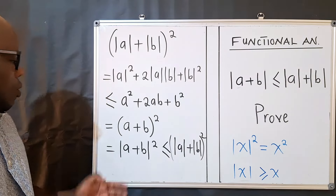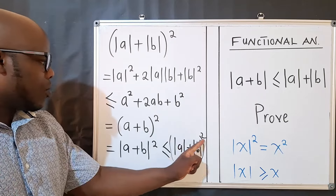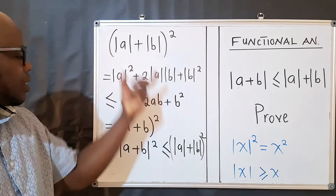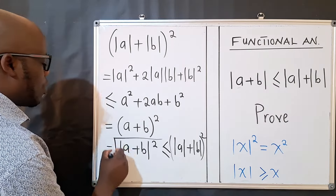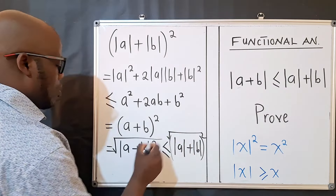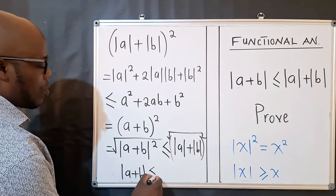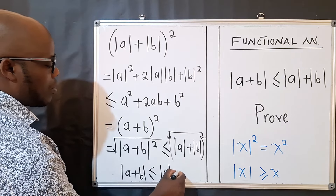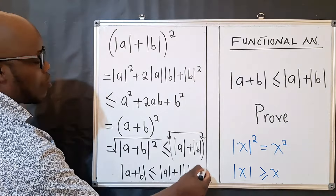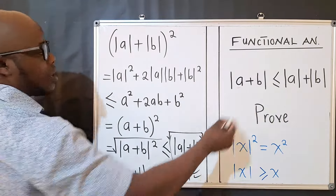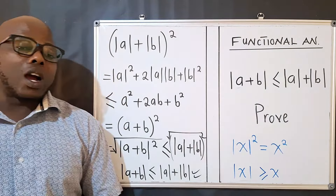We have what we started with on this side, but both sides have a power of 2. The next step is simply to square root both sides. When we do that, we're left with |a + b| ≤ |a| + |b|, which is exactly what we needed to prove. This is how you prove the Triangle Inequality.